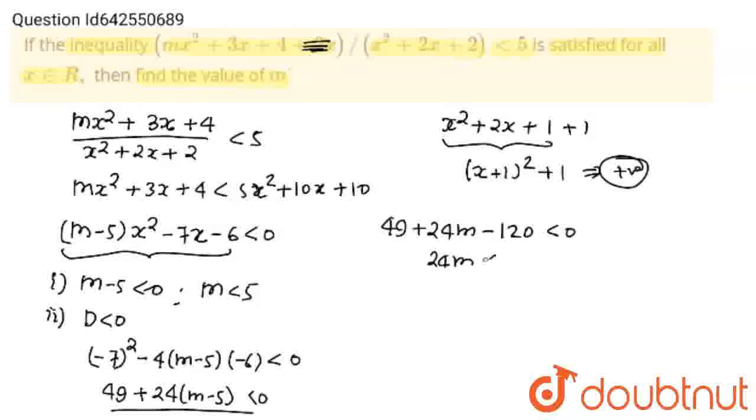Now I am going to write 49 plus 24m minus 120 should be less than 0. This will become 24m less than 120 minus 49. This will become 71. So 24m should be less than 71, which means that m should be less than 71 upon 24.